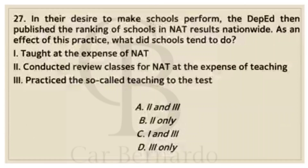Number twenty-seven: In their desire to make schools perform, the DepEd published ranking of schools in NAT results nationwide. As an effect of this practice, what did schools tend to do? Number 1: Taught at the expense of NAT. Number 2: Conducted review classes for NAT at the expense of teaching. Number 3: Practiced the so-called teaching to the test. Letter A: Two and three. Letter B: Two only. Letter C: One and three. Letter D: Three only. Answer: Letter A, Two and three.